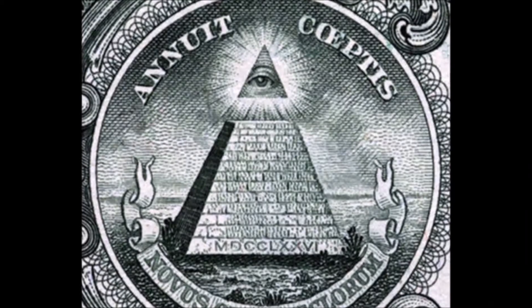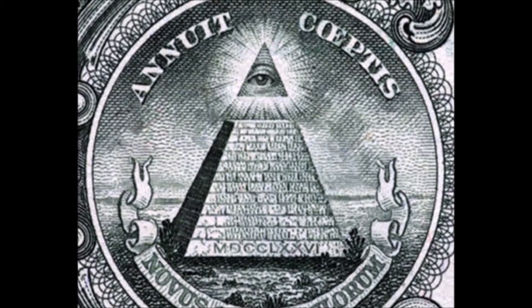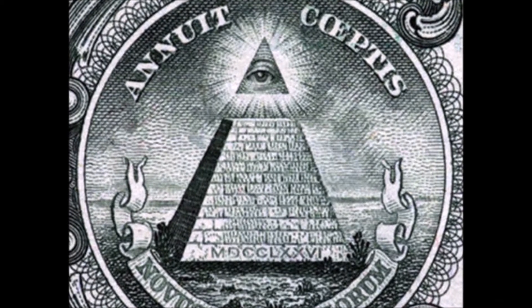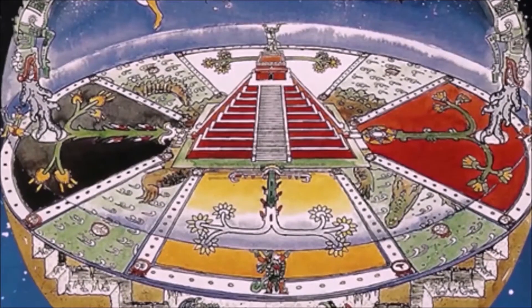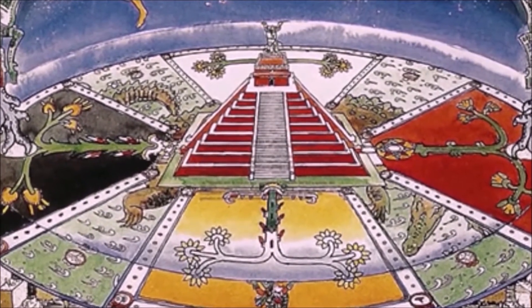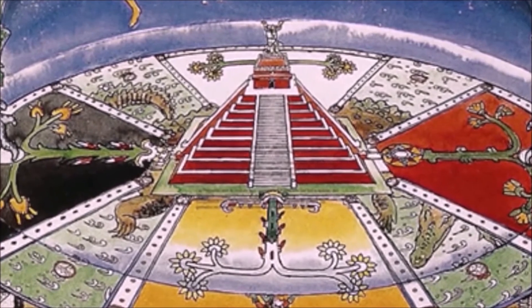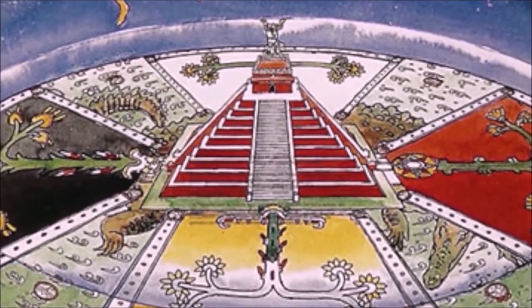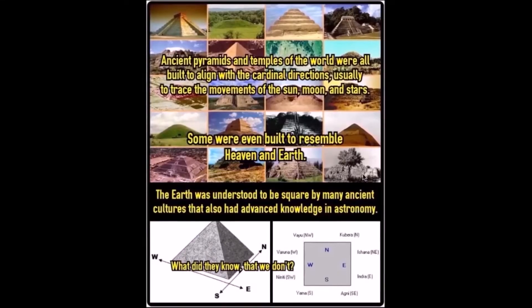On the dollar bill we can clearly see a pyramid in the center with a flat base of four corners and a circle surrounding it — exactly as shown in many ancient cosmologies. All the pyramids were built with each side towards a cardinal point.